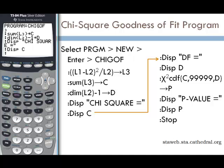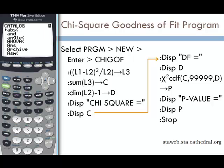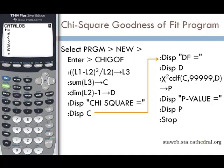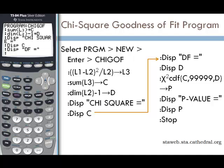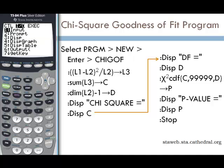Now display "DF =" in quotes — again using the equals sign from the catalog (SECOND ZERO). Then add another display to show D.